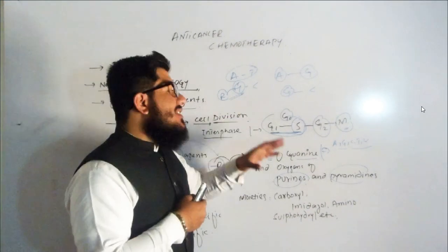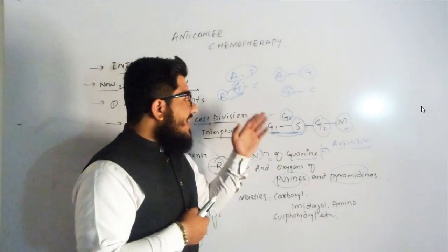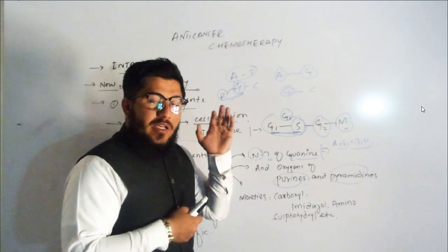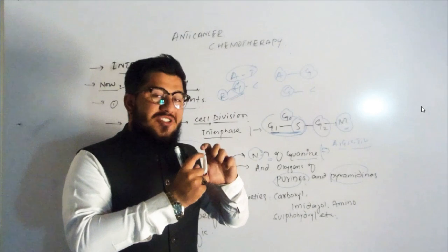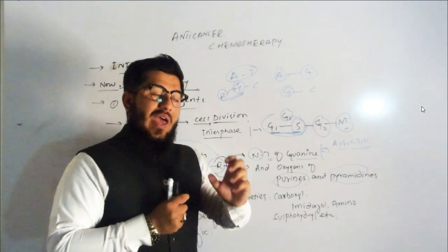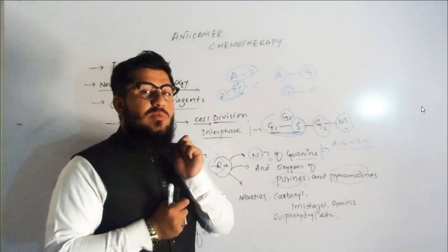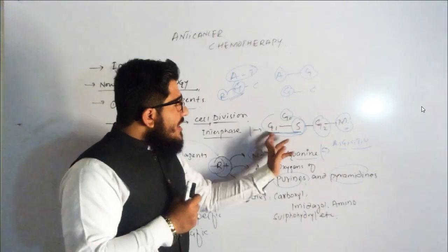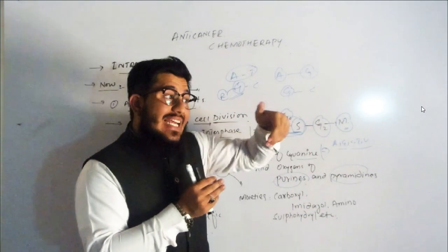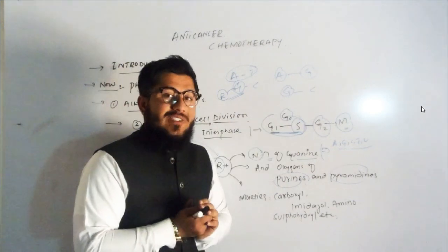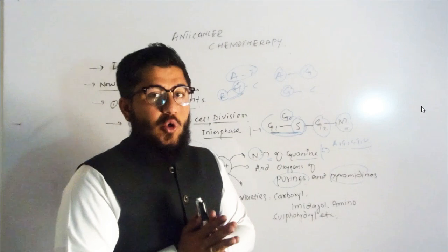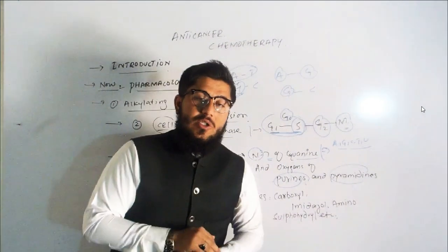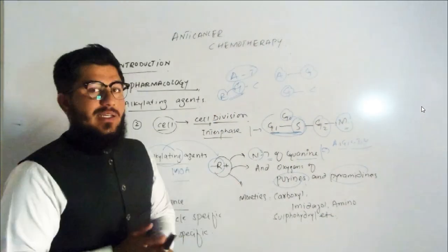If you go for the most accurate definition of alkylating agents, they act on all phases, but are more susceptible to late G1 and S phase of the cell division. So that's how there will be control on cell division.